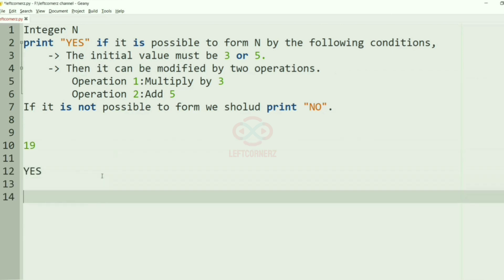We'll take our first test case. So here your N is 19, and initial values must be 3 or 5. So 3 is not equal to our integer 19, so we'll perform this operation.